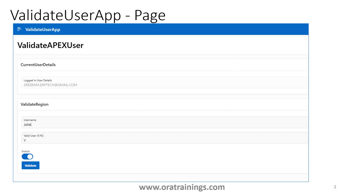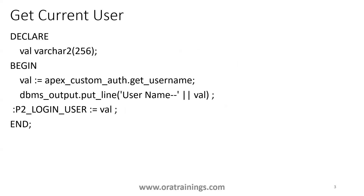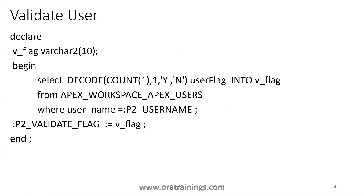There are two methods. The first one, to get the current user, we'll use a PL/SQL logic and the standard API called apex_custom_authentication.get_username. This particular function provides us the current logged-in user, and using this method we are setting the value of this user to a particular text input box.